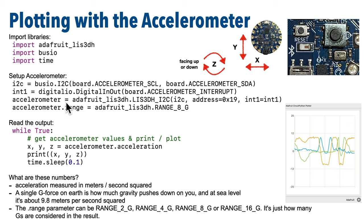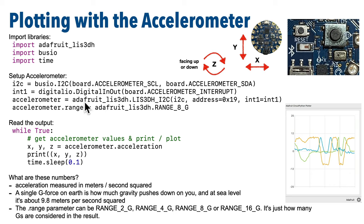Then we'll create an accelerometer object using the adafruit_LIS3DH library: `accelerometer = adafruit_LIS3DH.LIS3DH_I2C(i2c, address=0x19, int1=int1)`. Not a very friendly line, but you use this whenever you need to create an LIS3DH accelerometer object on a CircuitPlayground. Once we do that, we refer to the variable accelerometer whenever we want to work with the accelerometer in our code.